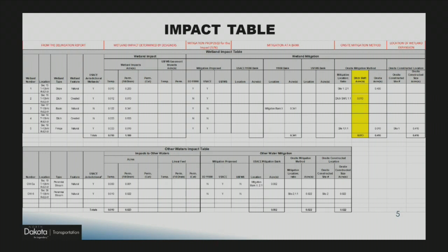So I'll go over the wetland impact table. The first portion of the wetland impact table is obtained from a delineation report. The next part of the table — designers add the wetland impact information, whether the impacts are temporary or permanent to the wetland, mitigation proposed yes or no, if we plan to mitigate at a bank or on site. You can see the yellow column in the on-site area — the ditch shift column was added recently. The last two columns are the location of the wetland expansion, where we actually construct the wetland and the acreage it will be constructed to. The other water impact table is pretty similar, with acreage, temporary or permanent impact, mitigation proposed, and whether to use a bank or on-site.